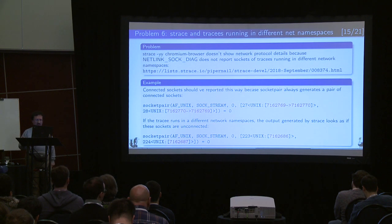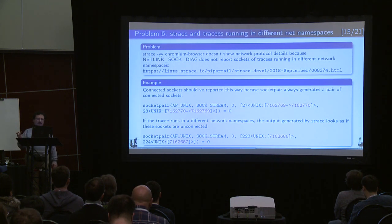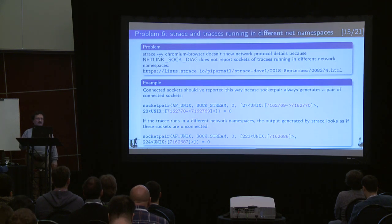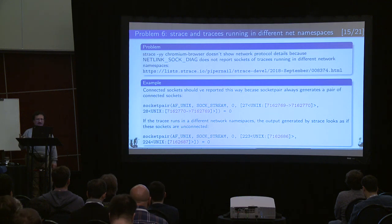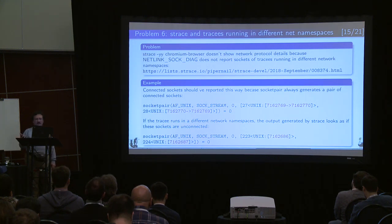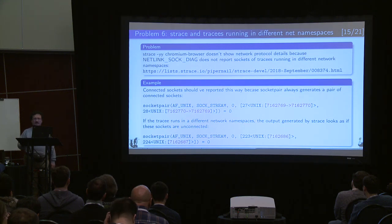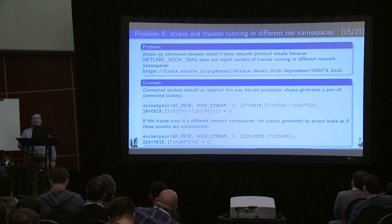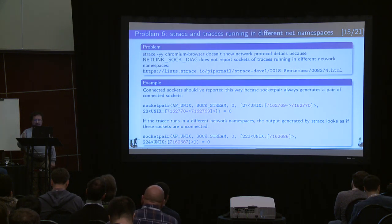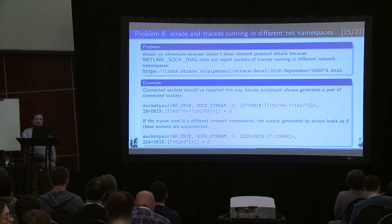In this example from that bug report, the first socketpair invocation is made in the same network namespace - you see the sockets are created and connected. But when the process enters a different network namespace, the descriptors are created in a different namespace and they are not reported to strace, so they look like unconnected, which is not really the case. I don't think we can do anything with it - it's just a limitation. Probably some network people can suggest something about this, but I don't have any ideas how to work around this problem.